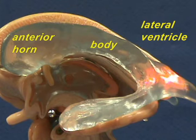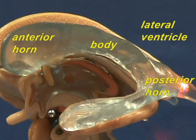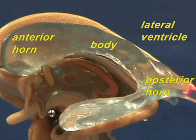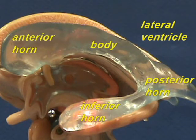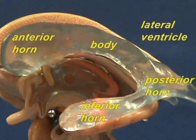Right back over here, this is the posterior horn of the lateral ventricle extending into the occipital lobes. And then right over here we have the inferior horn extending into the temporal lobe of the cerebrum.